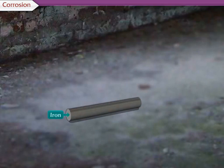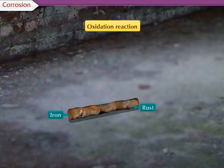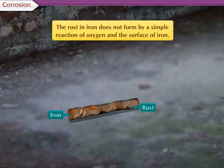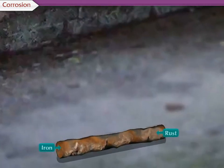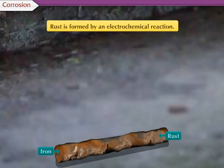Rusting of iron is an oxidation process. The rust in iron does not form by a simple reaction of oxygen and the surface of iron. This rust is formed by an electrochemical reaction.